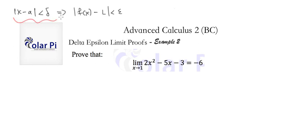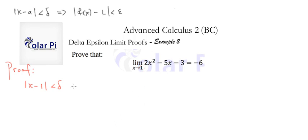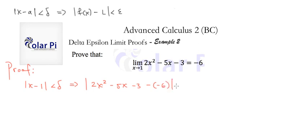If we apply that statement to our particular situation, it gives us the start to our proof. We write that |x - 1| < δ implies |f(x) - L| < ε, which is |2x² - 5x - 3 - (-6)| < ε. I choose a = 1 in most examples simply because 1 is easy to evaluate. You'd follow the same steps for x approaching 2 or 3.